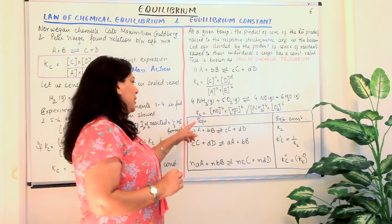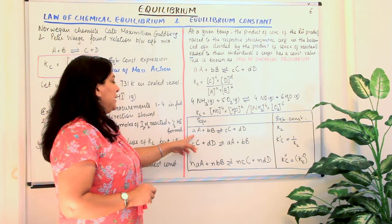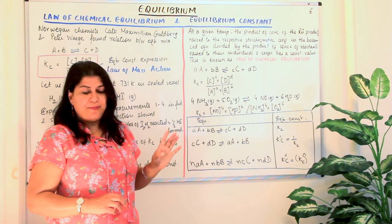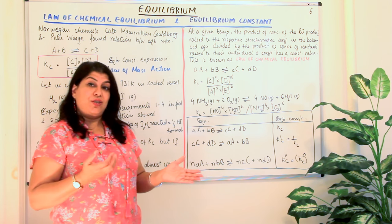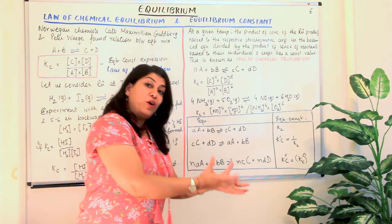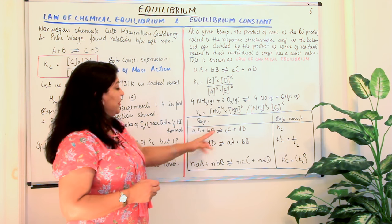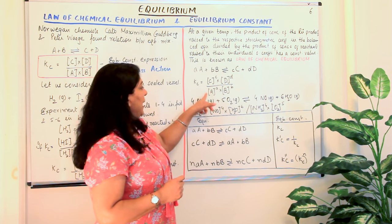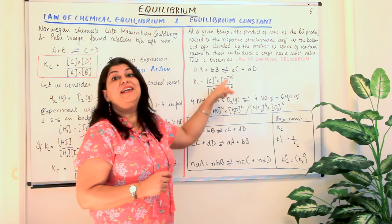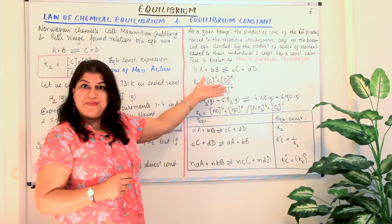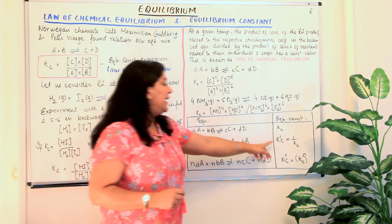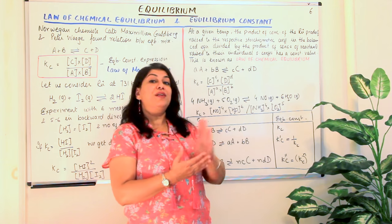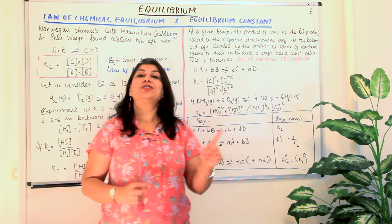Equilibrium can be established from both directions. For the forward reaction AA + BB ⇌ CC + DD, the equilibrium constant is KC. If we carry out the reverse reaction — starting with products CC + DD to give AA + BB — the equilibrium constant for that reverse reaction equals the inverse of KC. So KC for the reverse reaction equals 1/KC for the forward reaction.